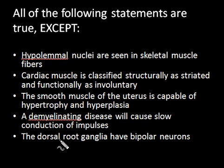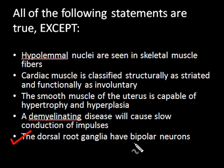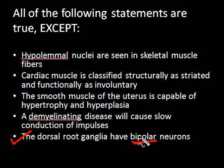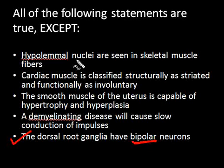The last statement: the dorsal root ganglia have bipolar neurons. This is the incorrect statement — bipolar neurons are seen in sense organs, not in the dorsal root ganglia. If you're unsure and everything appears to be true, always go back and read carefully, because you may have missed something. That's where you'll identify the correct answer.